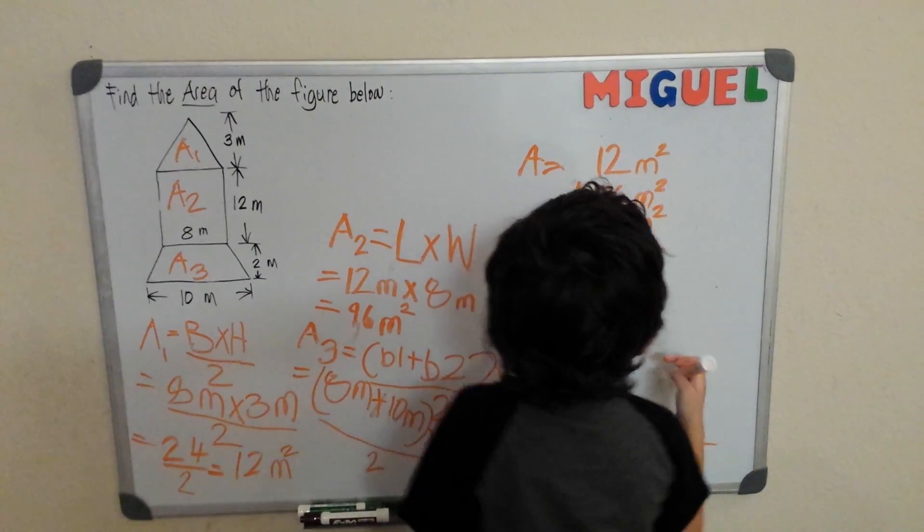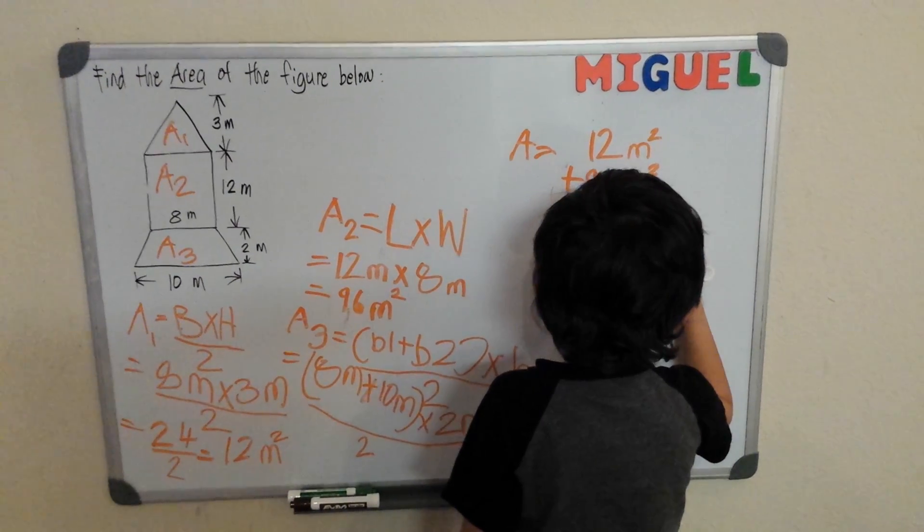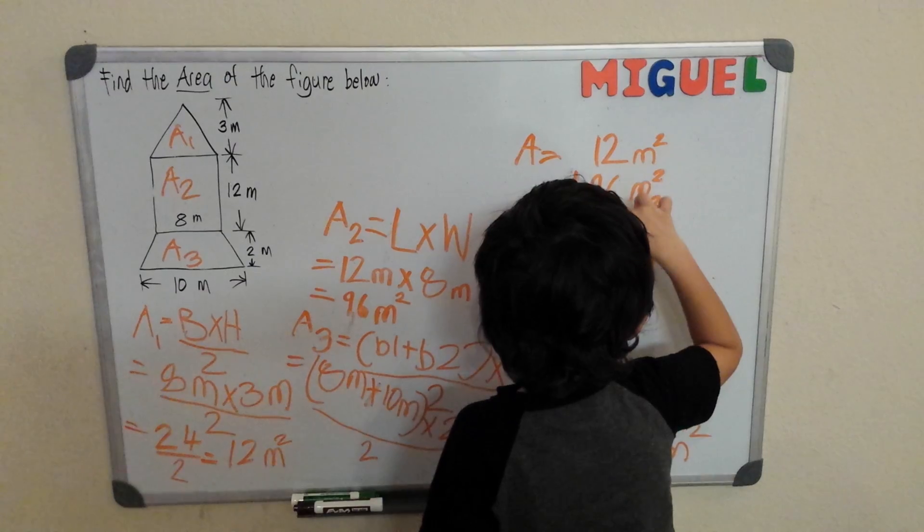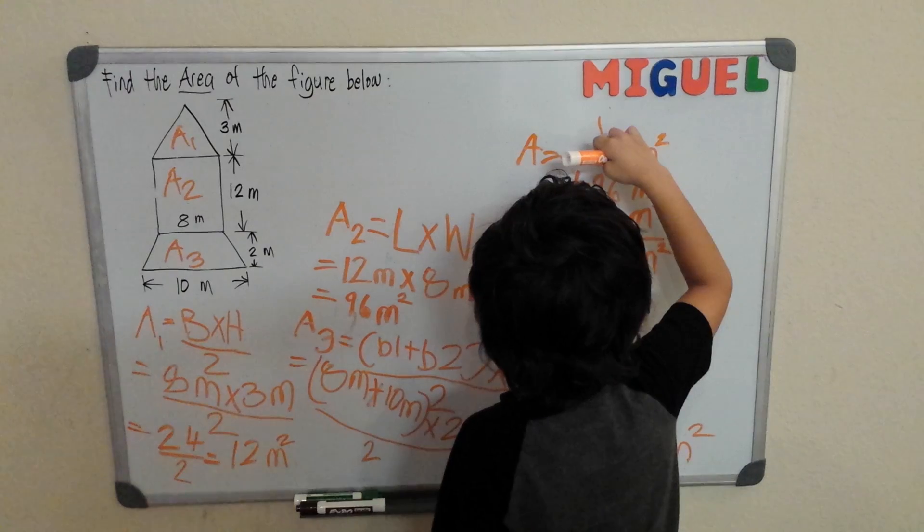Equals meters squared. We put it down. 2 plus 6 is 8 plus 8 is 16. Carry 1.